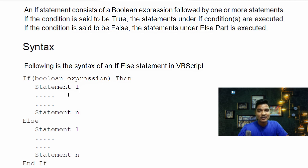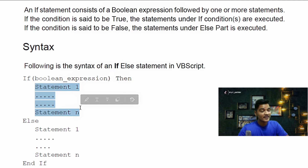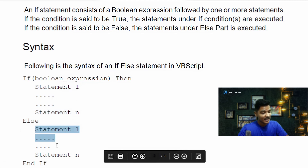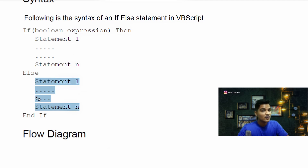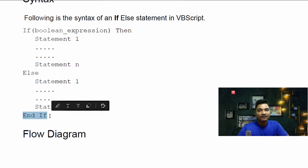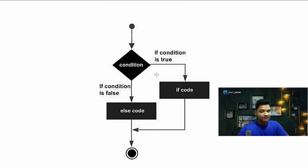The syntax for the IF-ELSE statement: write 'If', then the boolean expression, then your code. If this boolean expression is true, these statements will be executed. Otherwise it will move to the else statement. If this condition is not true, it will execute the code written under the else statement, and we end the IF statement with 'End If'. The flow diagram shows: if condition is true, the IF code executes; if false, the else code executes.